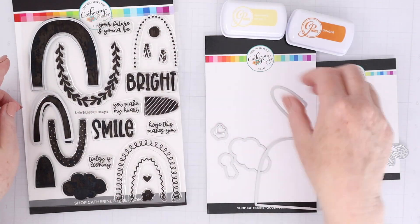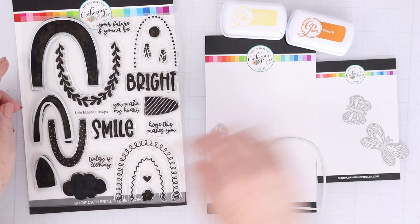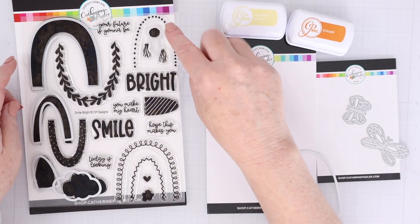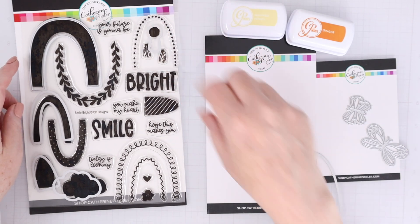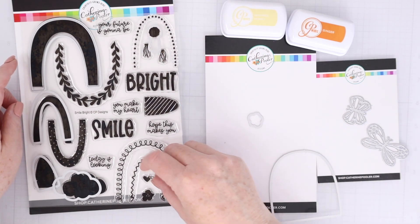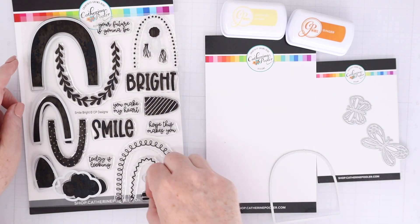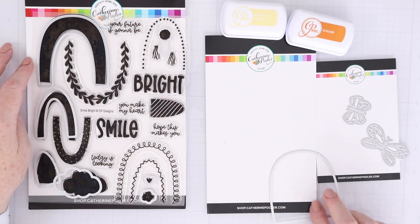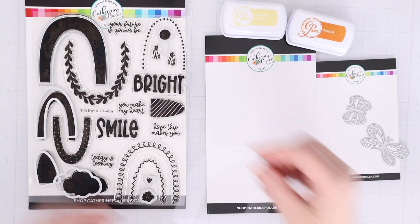The Smile Bright dies cut out the three different arcs of the rainbow. They also cut out the cloud and the little tassels, and there's also a small flower and a small heart that you can stamp and cut out. And then there's a base rainbow shape or an arc die that you can use as well if you want to pop up your rainbow.